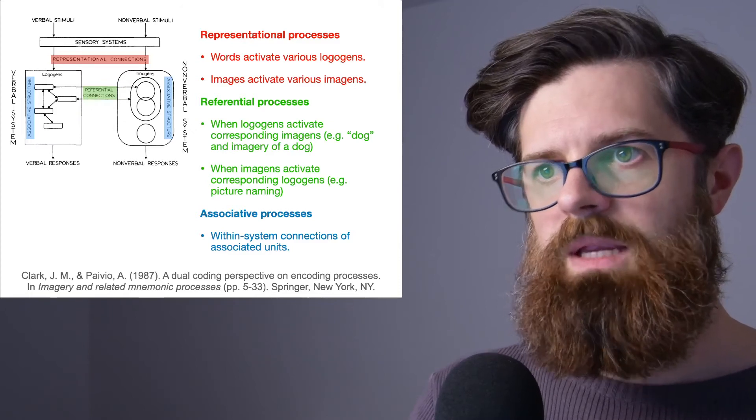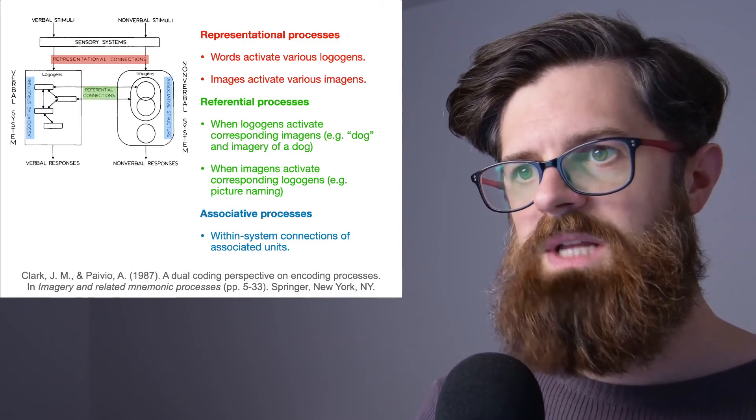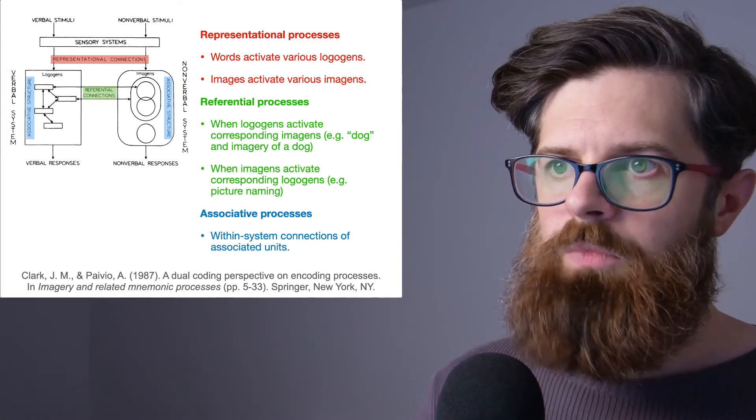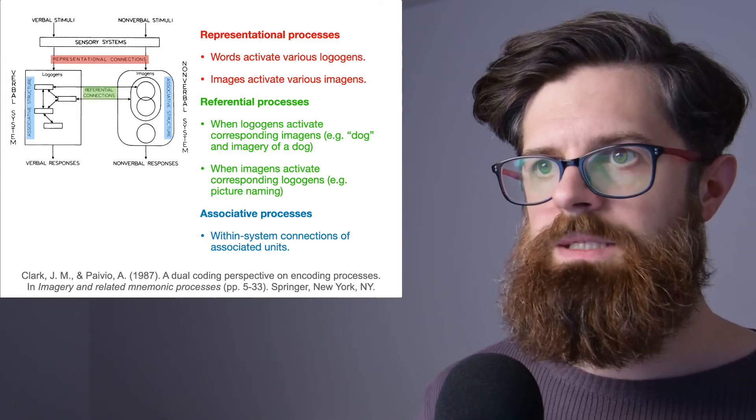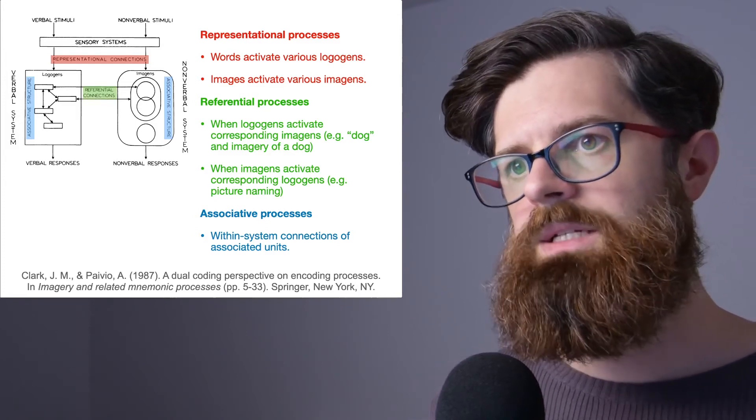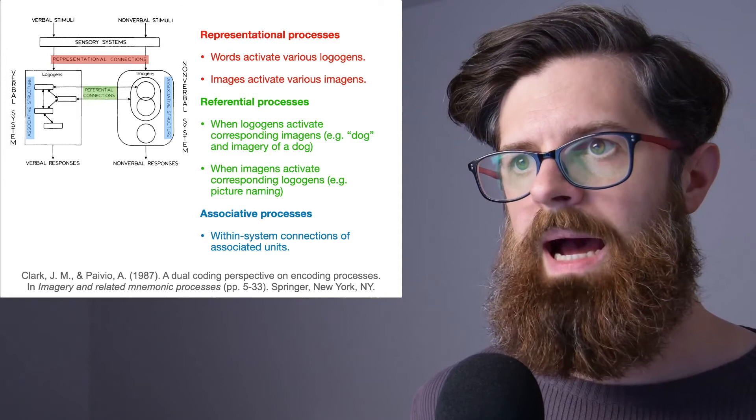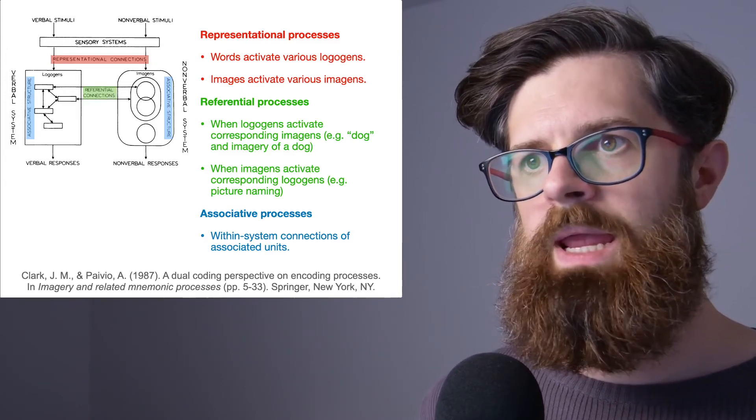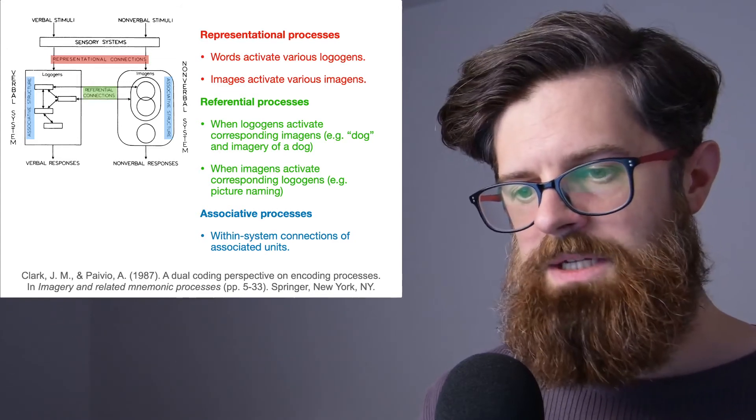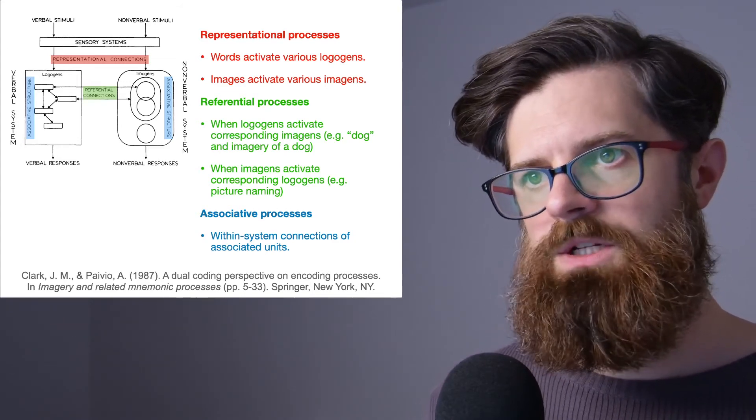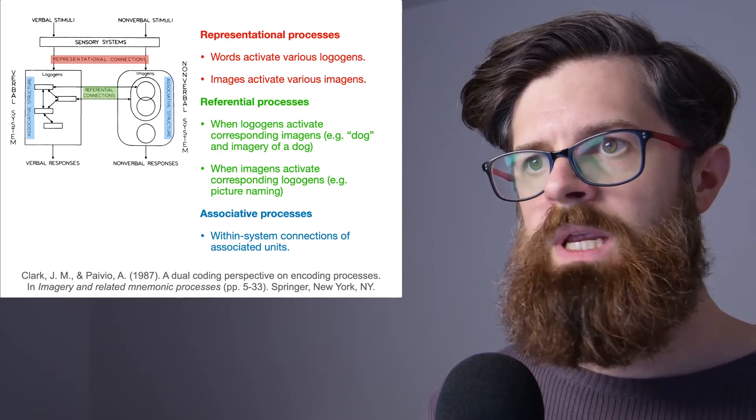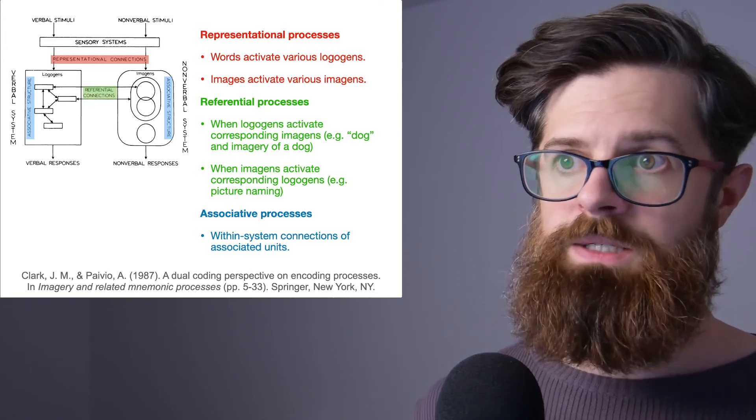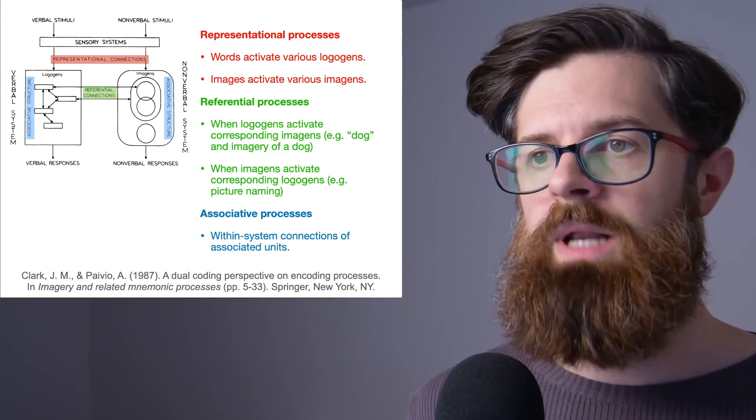The associative processes act to associate and link similar representations within systems. So I think that's an important concept to look at. Whilst the associative processes that are highlighted in blue here represent within-system associations, the green referential processes refer to between-system associations or connections.